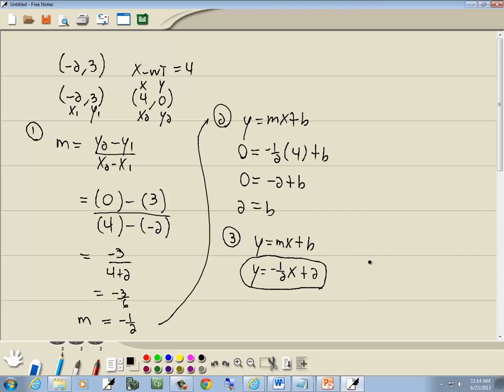And I'll do a quick check on this. Let me plug in negative 2. Okay, that gives us, yeah, that checks. Plug in 4, and that one checks. So our answer is y equals negative 1 half x plus 2.